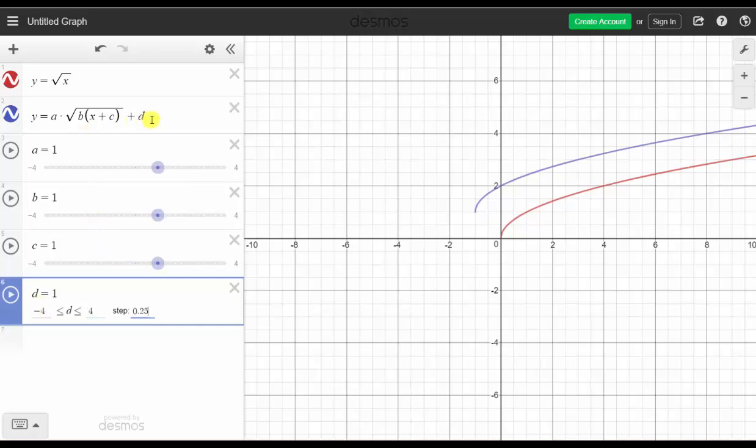Now to begin, we want both graphs to be the same. So we want the blue graph to be y equals the square root of x. We need to set a to one, b to one, and c and d to zero. So we have a equals one, b equals one, we'll change c to zero, and d to zero. And notice now we have the same graph.